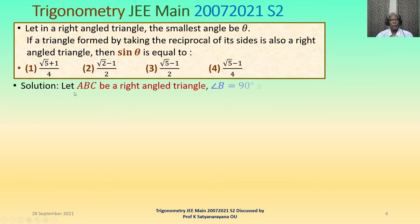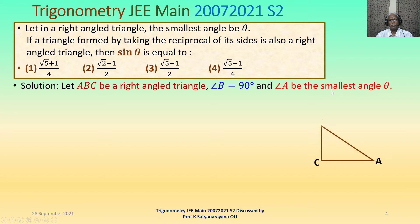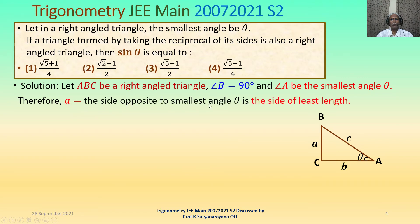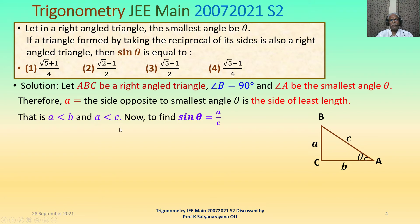Let ABC be a right angled triangle. Let angle B be a right angle, that is 90 degrees, and let angle A be the smallest angle theta. Here is the right angled triangle — theta is the smallest angle. Small a, small b, small c are the sides of the triangle. Because theta is the smallest angle, the side opposite to theta, that is small a, will have the least length: a is less than b and a is less than c. Therefore sine theta equals a by c.